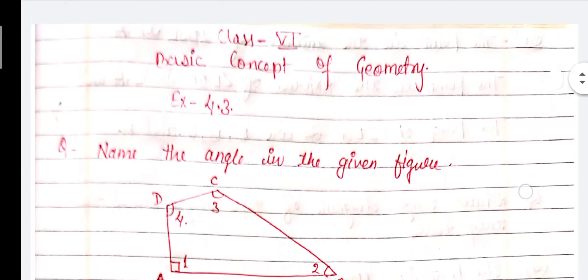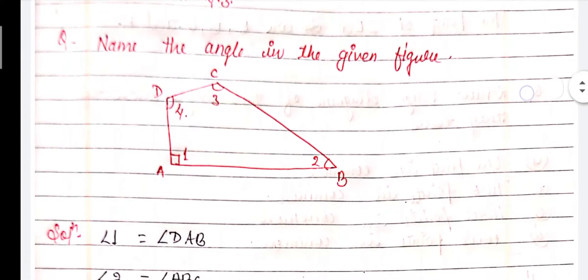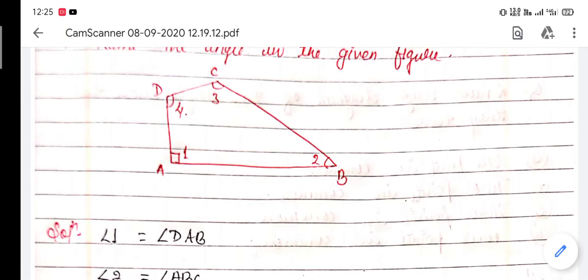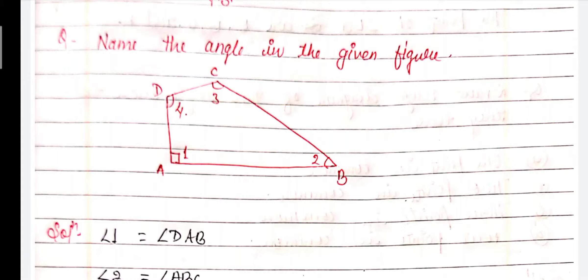The first question is: name the angles in the given figure. There is a quadrilateral ABCD. We can see that there are 4 angles — Angle 1, Angle 2, Angle 3, and Angle 4. Now we have to give the names. For your convenience I will write the numbers on the angles.